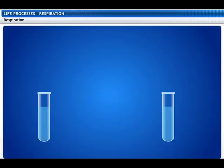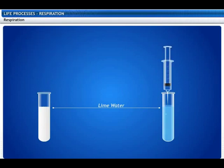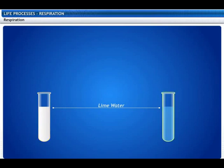Let's try to prove this through an experiment. Take two test tubes containing freshly prepared lime water. Blow air through the lime water in the first test tube. Use a syringe to pass air through the lime water in the second test tube. You will observe that in the first test tube the lime water turns milky immediately, while it takes longer in the second test tube. This proves that exhaled air contains more carbon dioxide than atmospheric air.